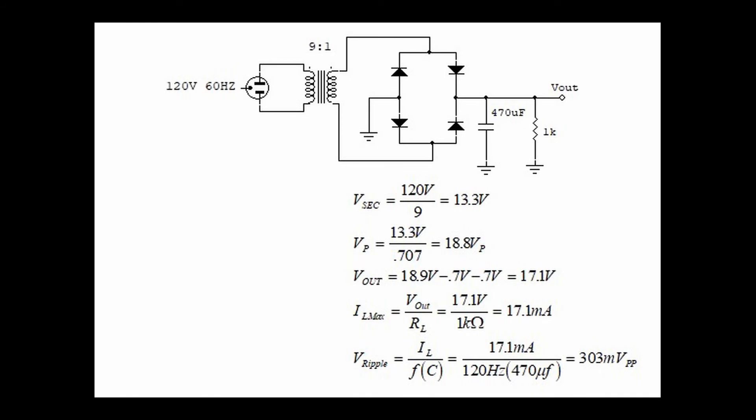We calculate the maximum current is 17.1 volts divided by 1 kilo ohm, 17.1 milliamps. Notice that this time when we calculate ripple voltage, the frequency is 120 hertz, and it's because we're using a full rectifier where we have two little humps, which means that the frequency is no longer 60 hertz but 120 hertz. In any case, we calculate ripple voltage, and this case is 303 millivolts peak to peak.